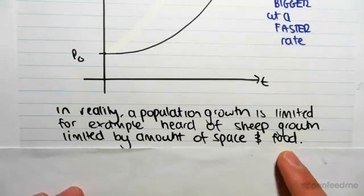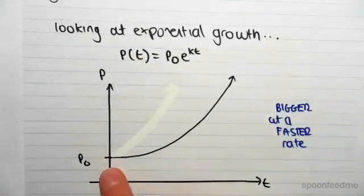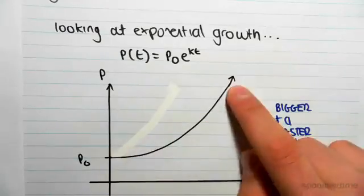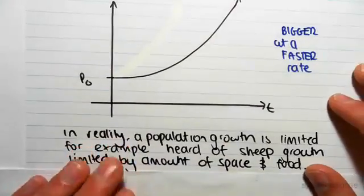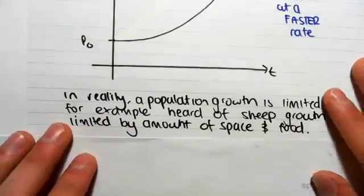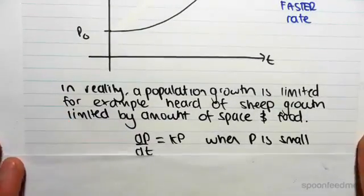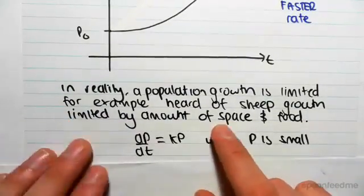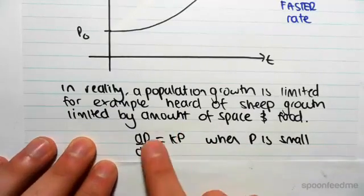So in reality, this model for population growth, the exponential population growth, is not a realistic model. All right, so a more accurate model... okay, let me just emphasize this. The fact this model, dP/dt...